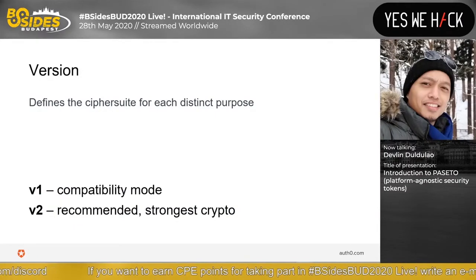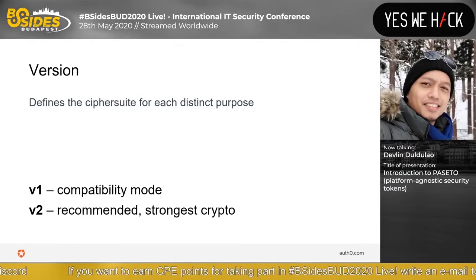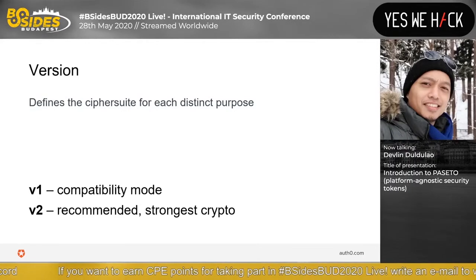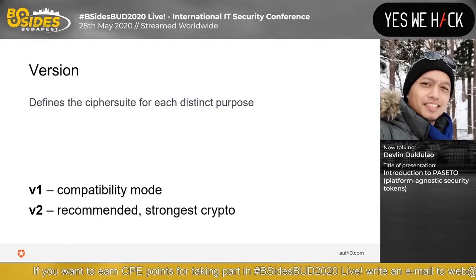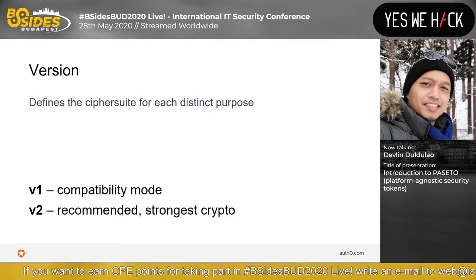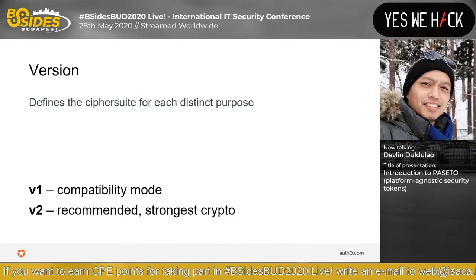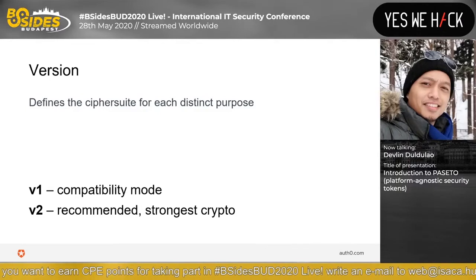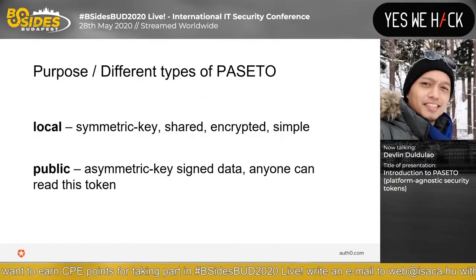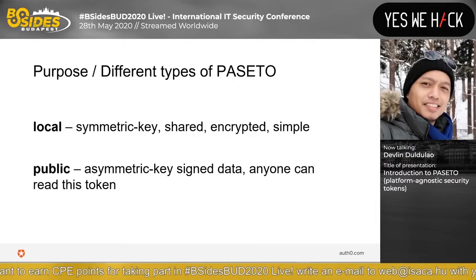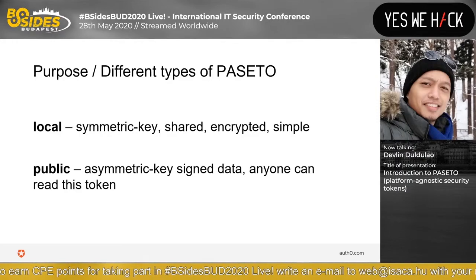The version tells you what version of PASETO is being used with the token. If V3 comes out a year from now, then users would only be allowed to use V2 or V3 — but no longer V1. Next is the purpose, which is local or public — these are different types of PASETO.